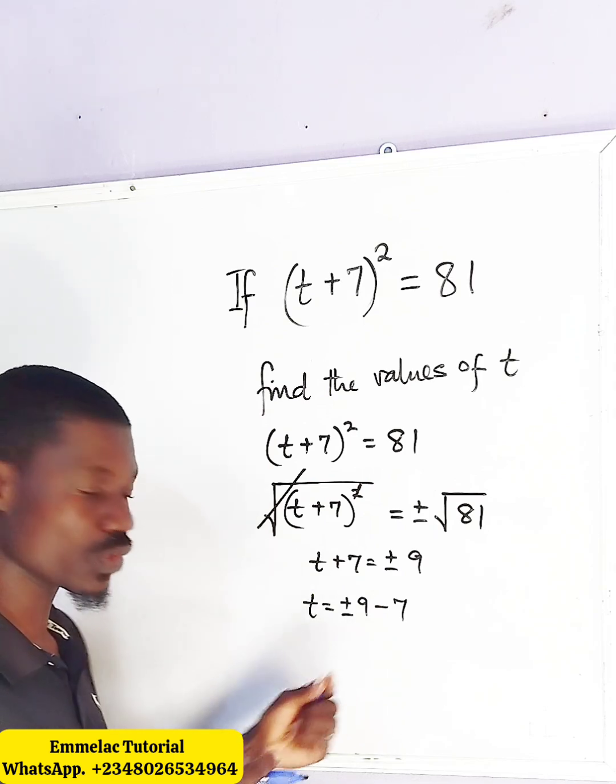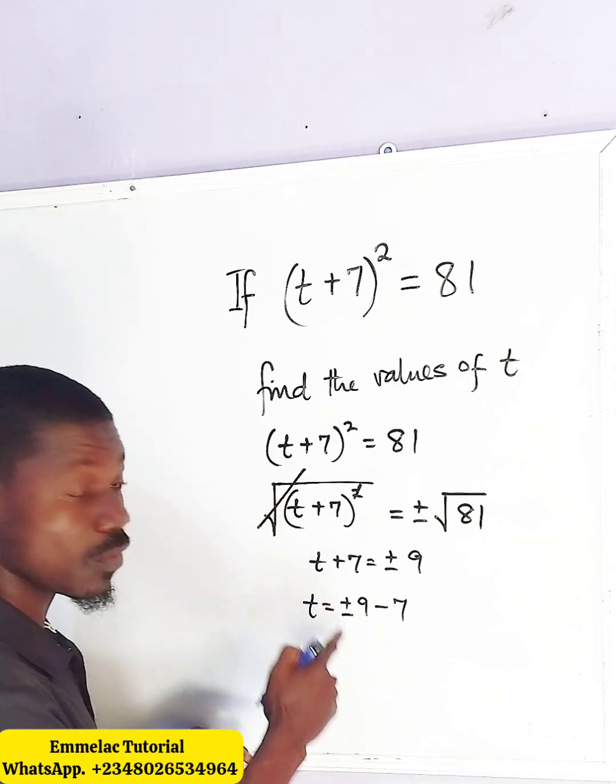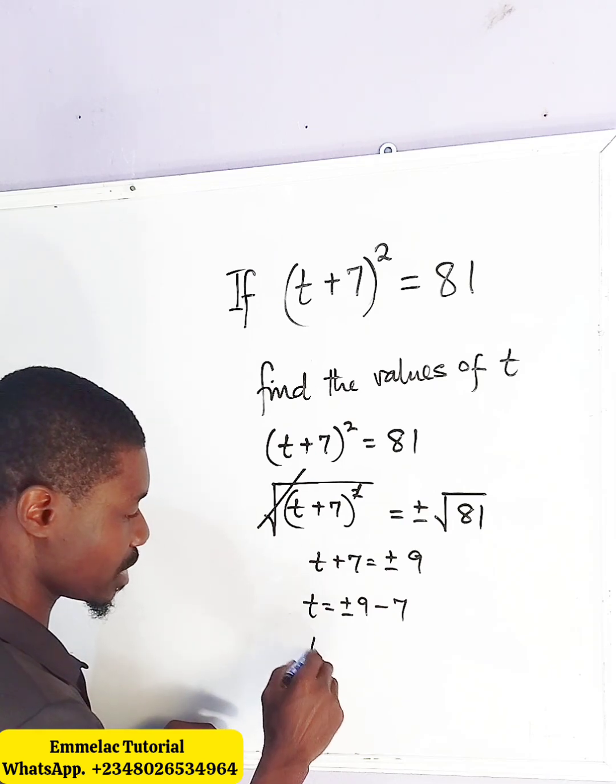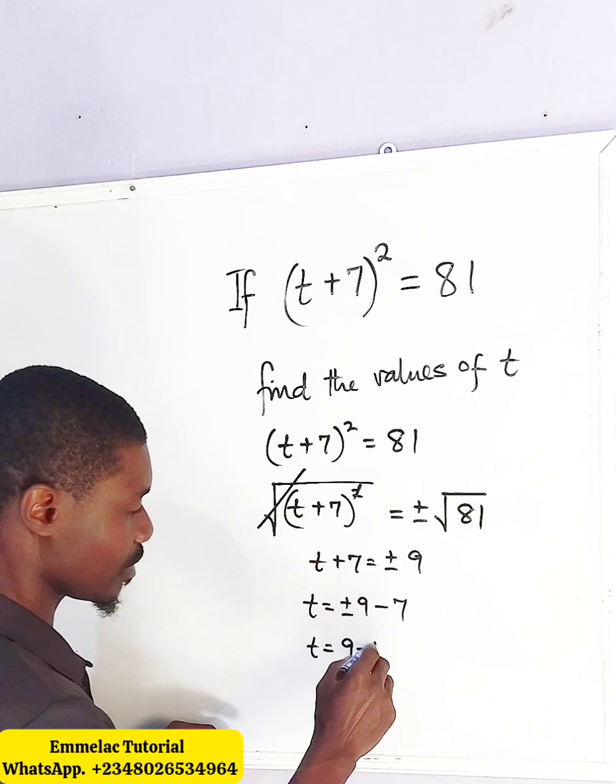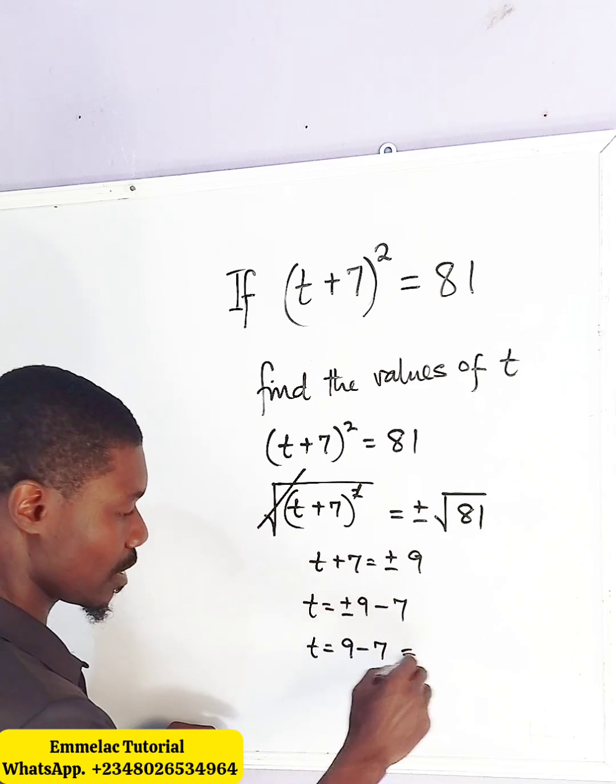At this point now, we have two solutions here, one for the positive and one for the negative, so here we have that t equals 9 take away 7, which equals 2.